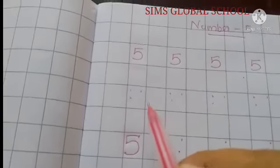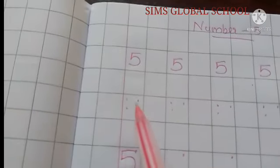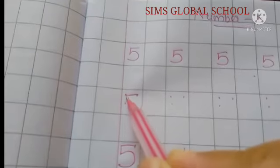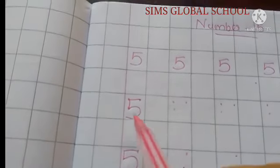If the child struggles in writing the number five, then you have to put three dots like this. So from here it's a sleeping line, then they have to write small standing line, then the semicircle. If they find it difficult, then only you need to do this.